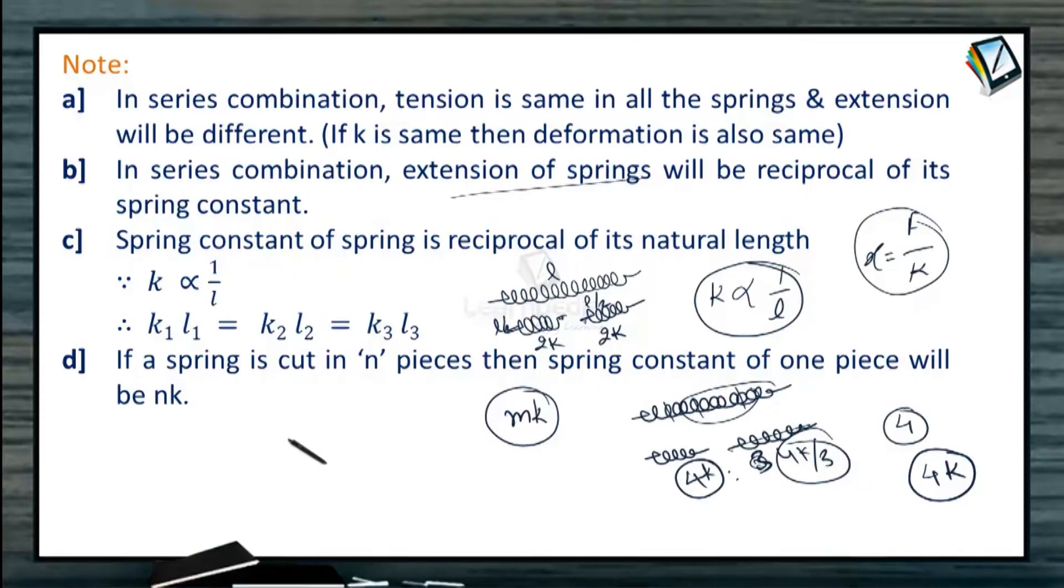And this particular part remains 4K. So when one spring of a spring constant K is divided in two parts, 1 is to 3, then their force constants would be 4K and 4K upon 3. It is written here, if a spring is cut in n pieces, then spring constant of one piece will be NK.